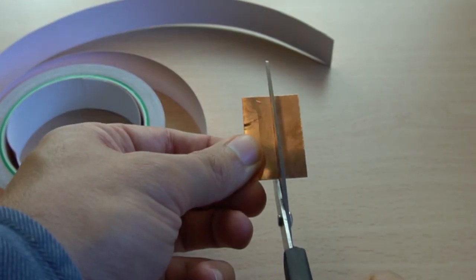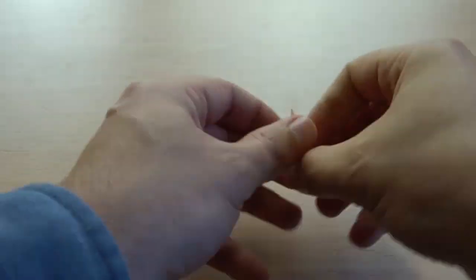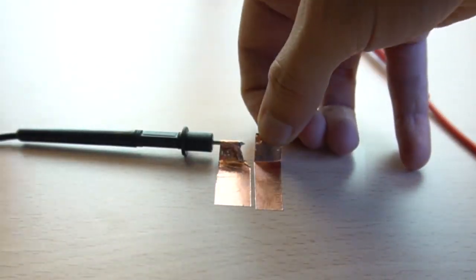Cut two strips and stick them together, they should not be touching. Roll the conductive copper into the probes.